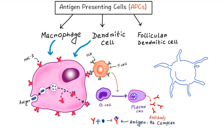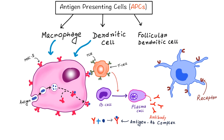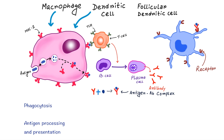Follicular dendritic cells are also antigen presenting cells but they act differently. On their cytoplasmic processes they have receptors for antibody, so when an antigen-antibody complex comes in contact with the cell, the antibody binds with that receptor. They can hold the antigen-antibody complex for a very long time within the lymph node, continuously offering the antigen to the lymphoid tissue to maintain and tone up the immune system.